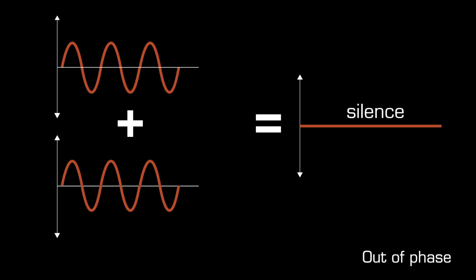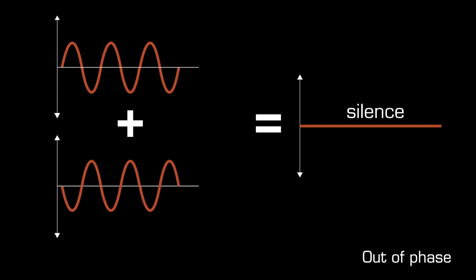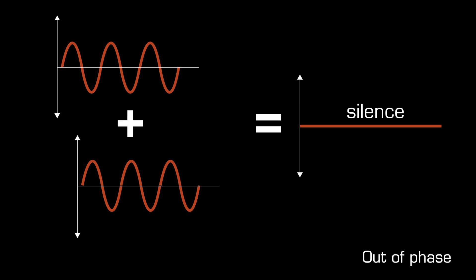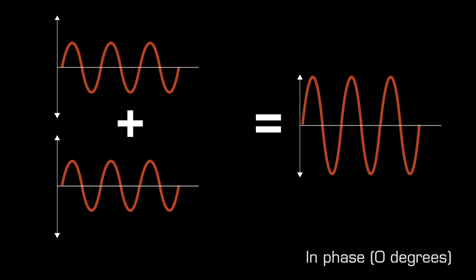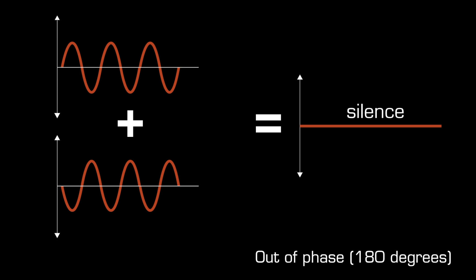If one of the sound wave signals is the mirror image of the other, or delayed in time by half a wavelength, they are said to be out of phase and completely cancel each other out. This too is a useful property and exploited by balanced signal transmission. These phase relationships can be expressed more precisely in degrees: two in-phase signals have a phase relationship of zero degrees, whilst two completely out of phase signals have a phase relationship of 180 degrees.